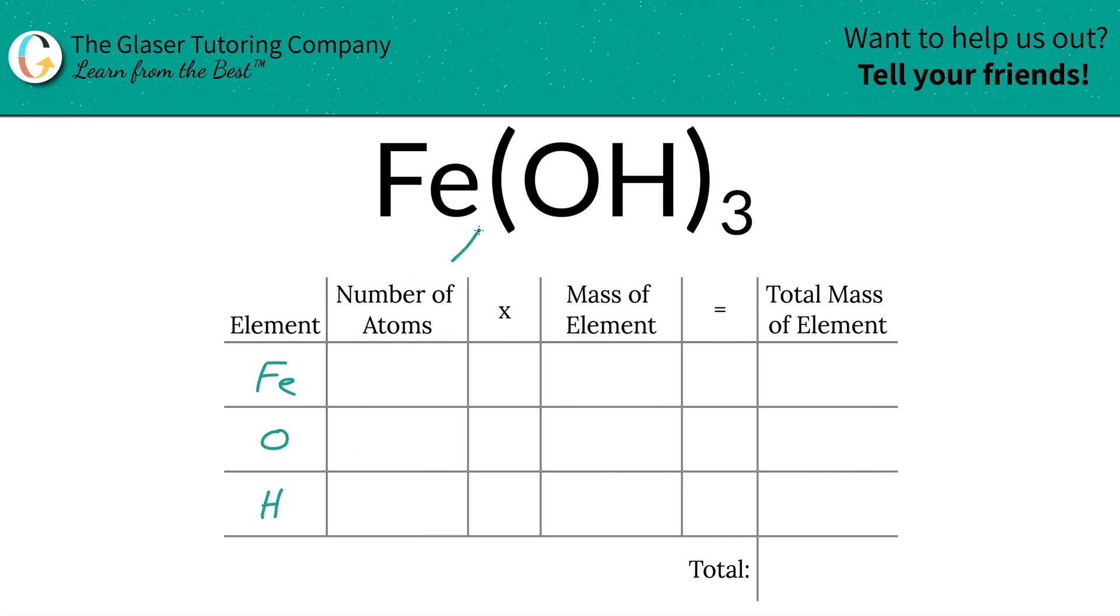Then we're going to take into account the number of atoms. That's where the subscripts come into play. If there's not a subscript there, it is assumed to be one. So there's one iron. There's also one oxygen, but you got to be careful. Oxygen is tied up in the polyatomic anion, hydroxide, and you have three of them. Therefore, you have three oxygens.